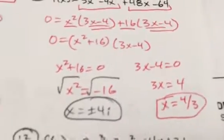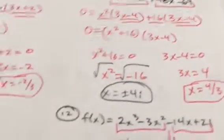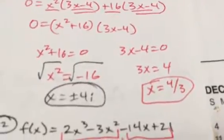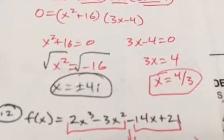The square root of 16 is 4, so x = ±4i. For the next equation, 3x - 4 = 0. Add 4 to both sides and divide by 3 to get x = 4/3.